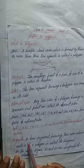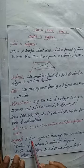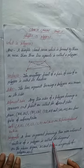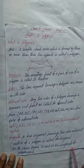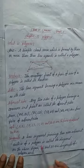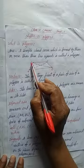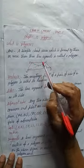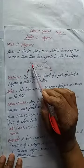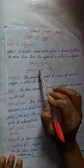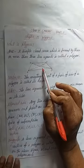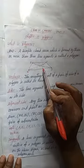Now the last point is diagonals. A line segment joining two non-adjacent vertices of a polygon is called its diagonal. In the above figure, AC and BD are diagonals of the polygon. So joining A to C and B to D gives the diagonals. Here there are two diagonals. I hope you have understood this topic. Thanks.